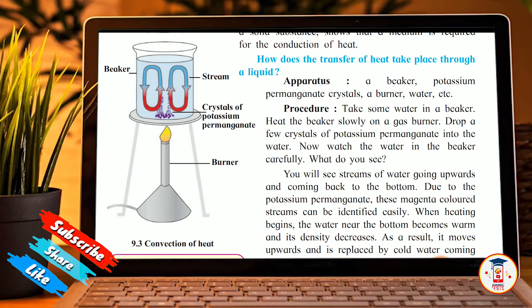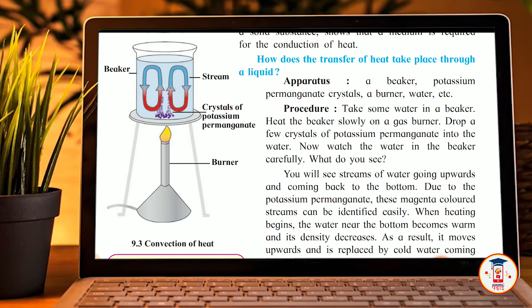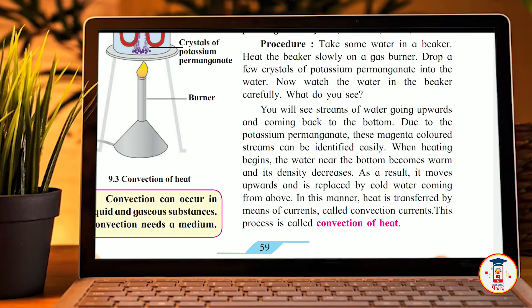You will see streams of water going upwards and then coming back to the bottom due to the potassium permanganate. These colored streams can be identified easily. When heating begins, the water near the bottom becomes warm and its density decreases. These are the convection currents. This process is called convection of heat.